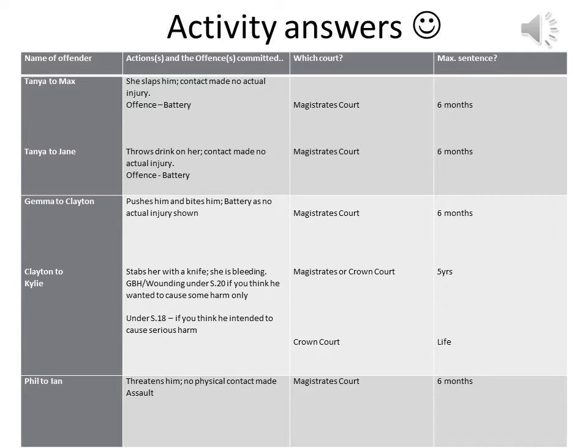So because the injury is blood, you would go down the GBH route. Now because GBH is split into two, this is where it gets a little bit complicated. However, it's very subjective, so what you think and what the person next to you thinks, what your friend thinks, might be completely different. The difference between the two sections is if you think he did not want to cause serious harm to her, he only wanted to cause some harm to her, maybe just to get her off, then you could go down the section 20 charge. If you think nope, he used the knife, he definitely wanted to cause serious harm, then you would go down the section 18 route.